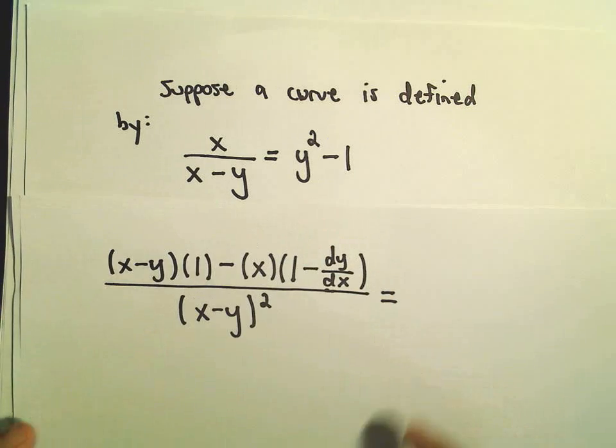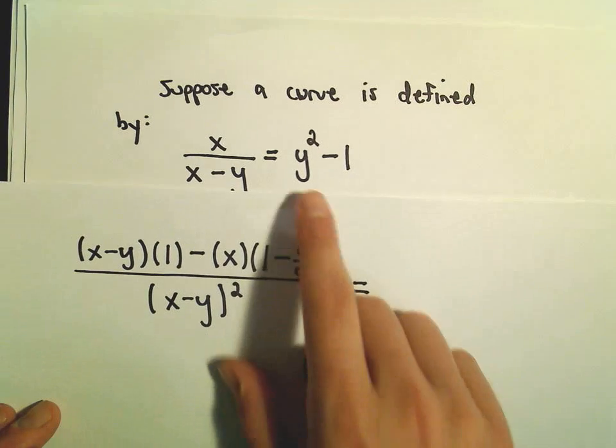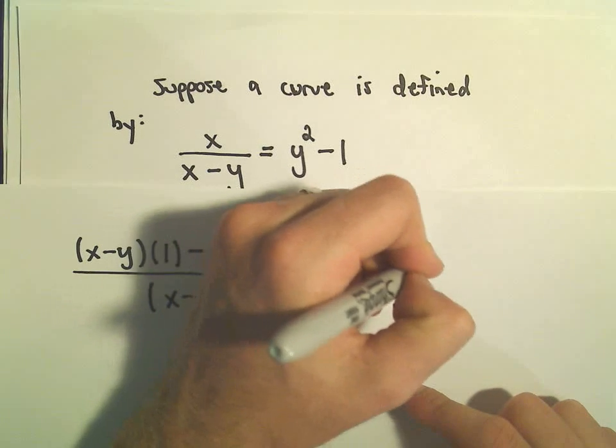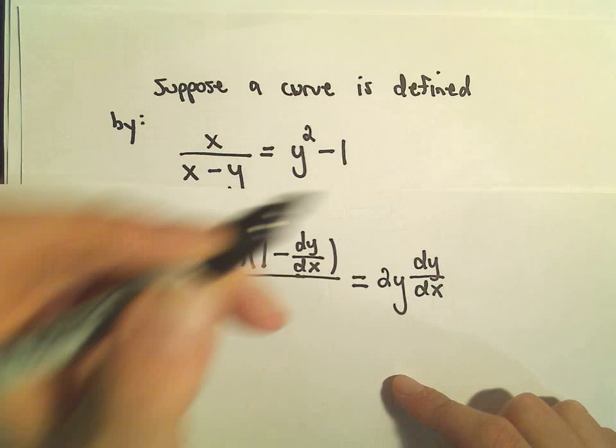Okay, on the right side, we'll have to again take the derivative using implicit differentiation, so we'll just get 2y times dy over dx.